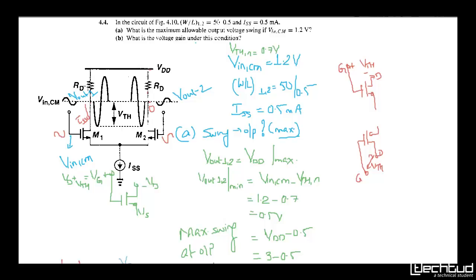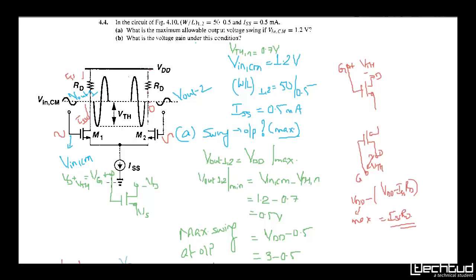Now people might say: since ISS current is going through RD, shouldn't the swing just be ISS×RD? I agree — but RD is not given in this problem, so we cannot calculate it that way. If RD were given, the maximum swing would simply be ISS×RD. Instead, we used the gate-to-drain saturation constraint to determine that the output cannot go below 0.5V, giving us the 2.5V swing directly.